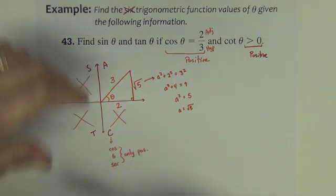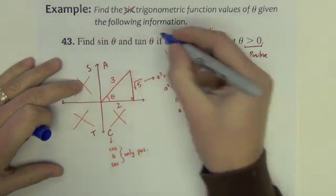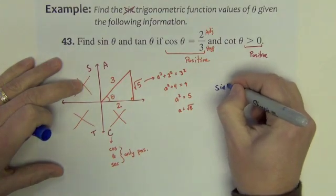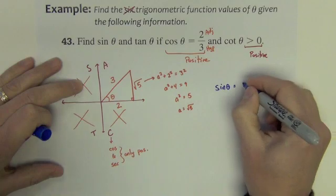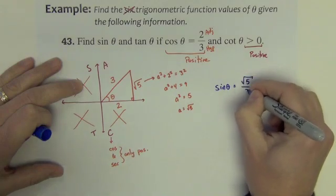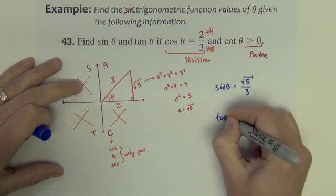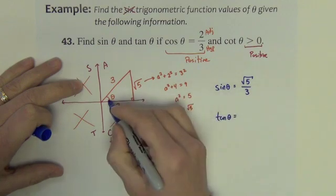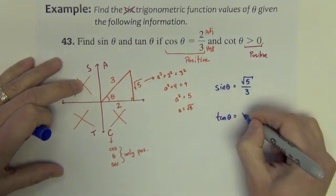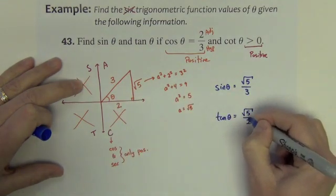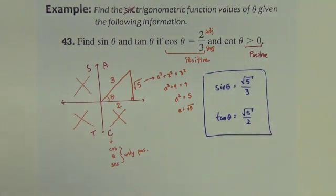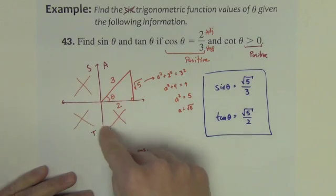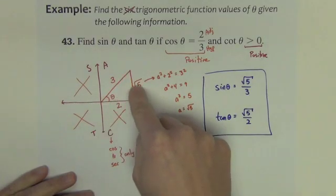With all of that found, we can answer for the two trig functions. Sine of theta is opposite over hypotenuse: √5 over 3. Tangent of theta is opposite over adjacent: √5 over 2. We had to figure out where the angle was first, then complete solving the triangle, and then we could answer the questions.